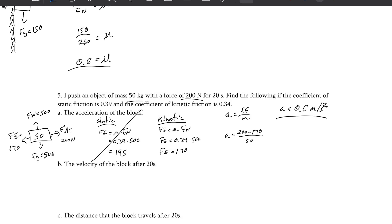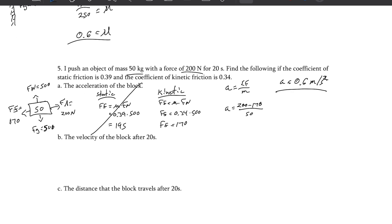Now it wants to know the velocity of the block after 20 seconds. Well, velocity is not a variable we use in forces, but it was in kinematics. We know the acceleration is 0.6. We know the time is 20 seconds. We know the initial velocity was 0, because if I'm going to push something, it's usually not already moving. And we want to know the final velocity. Using V = V₀ + at, we have V is equal to 0 plus 0.6 times 20. So final velocity will be 12 meters per second.